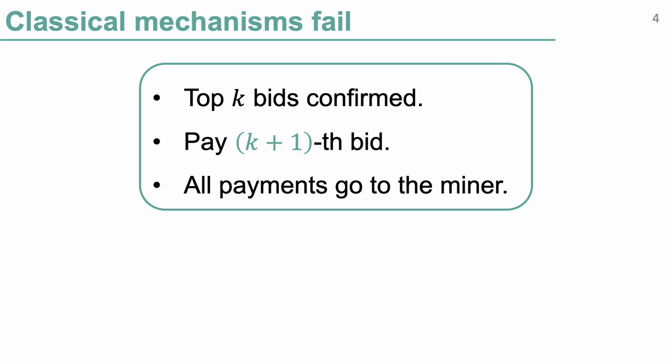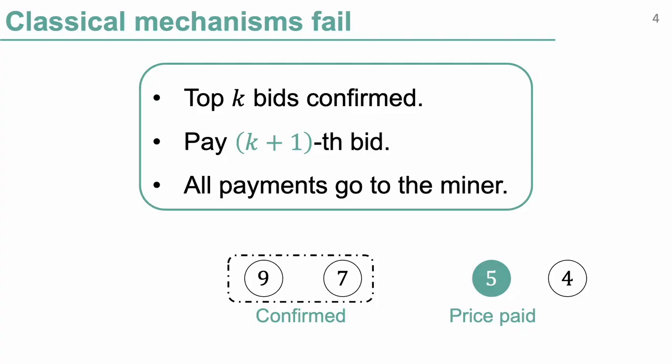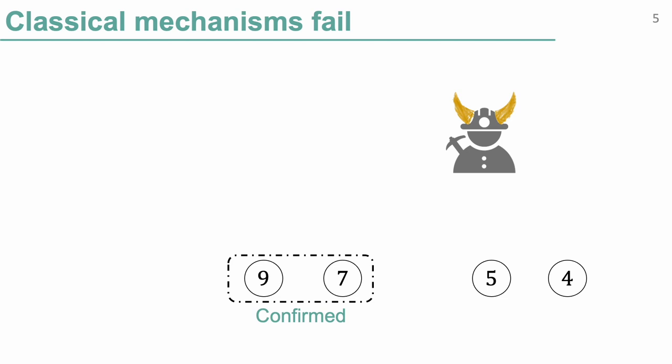We know that second-price auctions are gold standards in classical mechanism design because they incentivize truthful bidding. So why not use a second-price auction? In a blockchain context, the second-price auction becomes a K-plus-1 price auction: the K highest bids are confirmed and they each pay the K+1 bid as the price to the miner. For example, bids 9 and 7 are confirmed and they each pay price 5. But a strategic miner will inject a fake bid of 6, so the confirmed bids end up paying 6 rather than 5. The miner gains more by deviating.